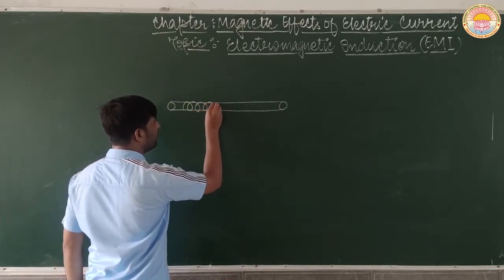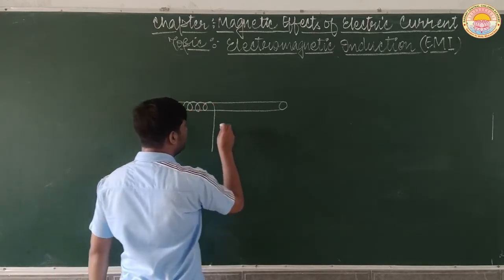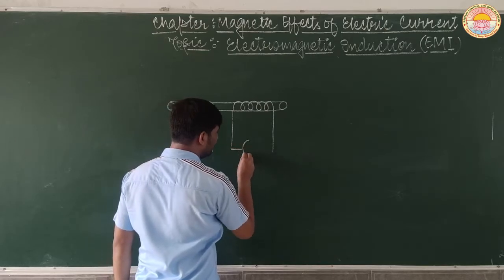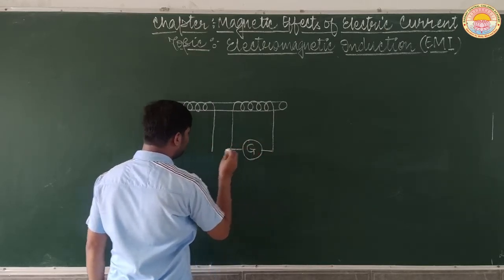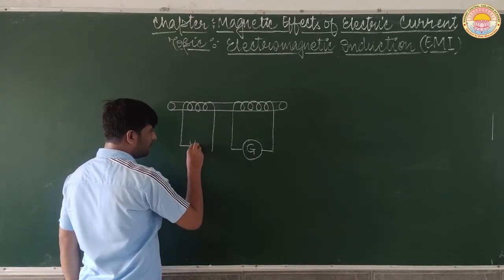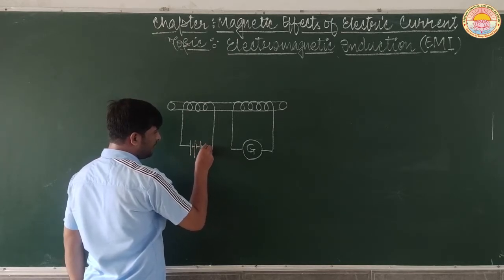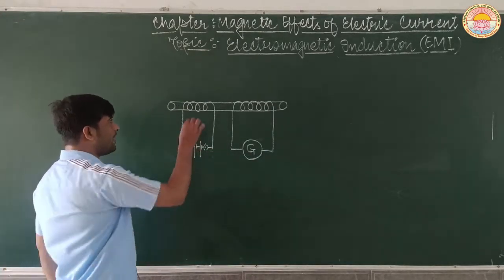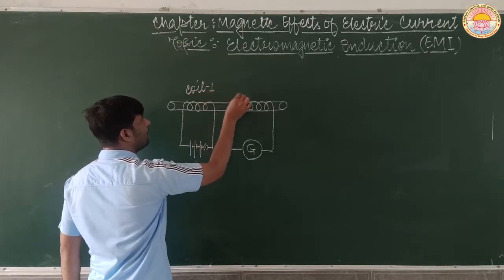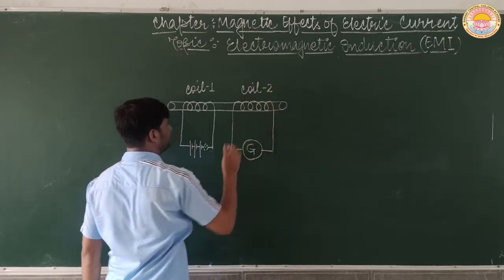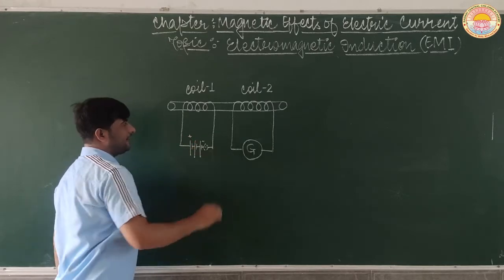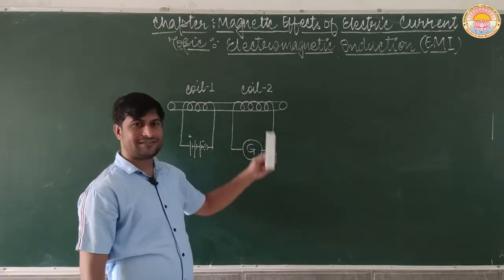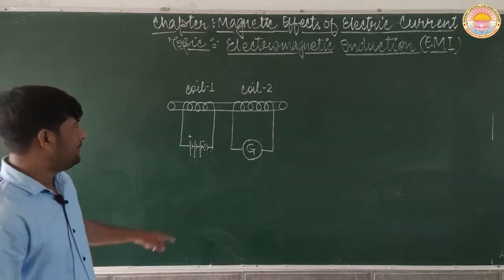This is coil first and this is coil second. Coil first is connected with a battery and a key. Coil second is connected with a galvanometer. This one is the positive end and this one is the negative end.